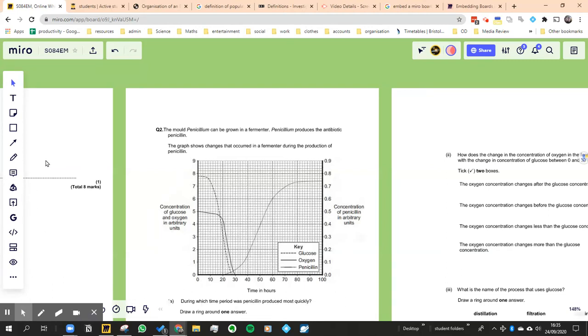The equation you want to be thinking about here is the equation for respiration. So it's going to be oxygen plus glucose produces carbon dioxide and water.